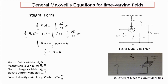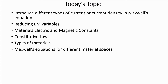This video will introduce different types of current and elaborate Maxwell's equation by incorporating them. We also reduce electric field and magnetic field variables by applying constitutive law. How the electric and magnetic characteristics of a material affect the constitutive law will be discussed. We are going to categorize materials by their electrical and magnetic features as homogeneous, isotropic, anisotropic, linear, non-linear, and so on.